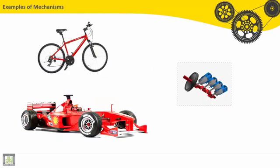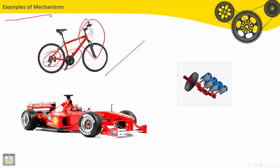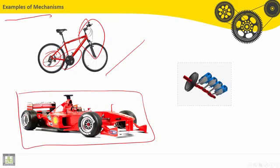Here we have some examples of mechanisms. A bicycle, for example, is a mechanism or contains some sub-mechanisms. A vehicle here, a car, it is a mechanism, it is a machine and contains some sub-elements or sub-mechanisms. One of those mechanisms is the engine.